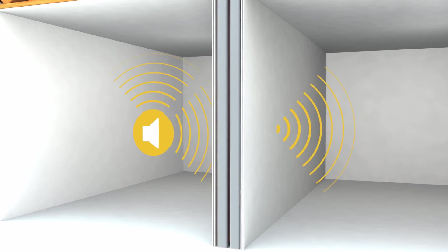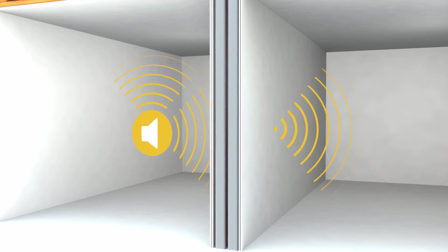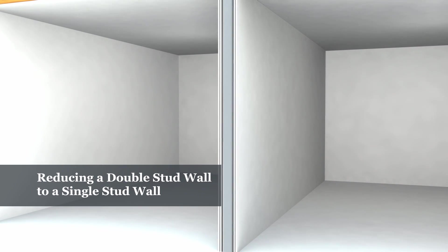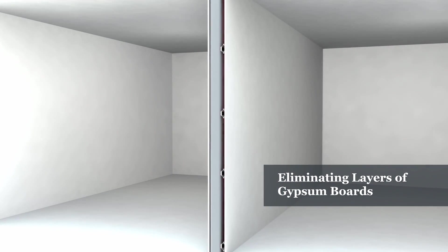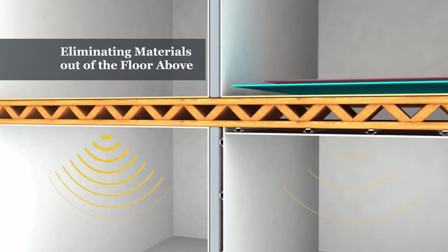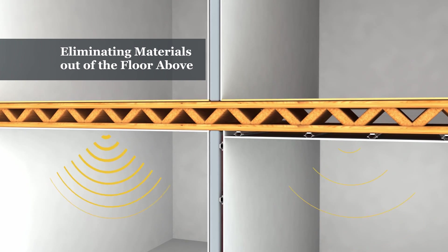The Genie Clip system not only improves sound isolation, but can reduce costs by reducing a double stud wall to a single stud wall, by eliminating layers of gypsum board in both wall and floor ceiling assemblies, or by eliminating materials out of the floor above a Genie Clip ceiling installation.